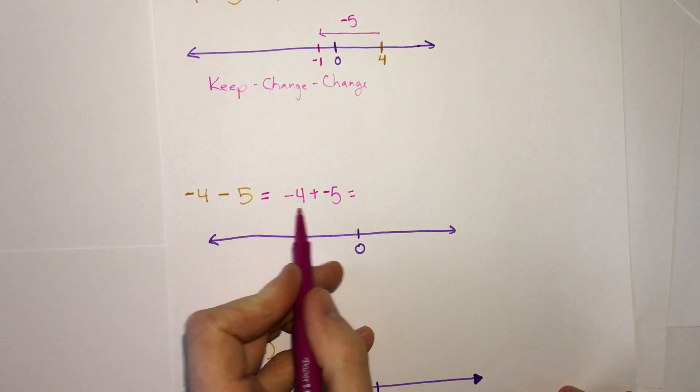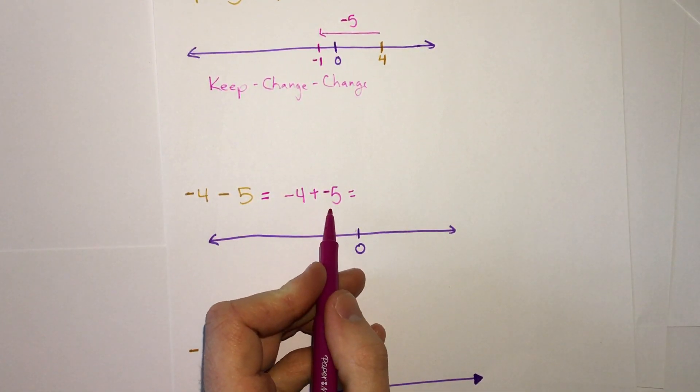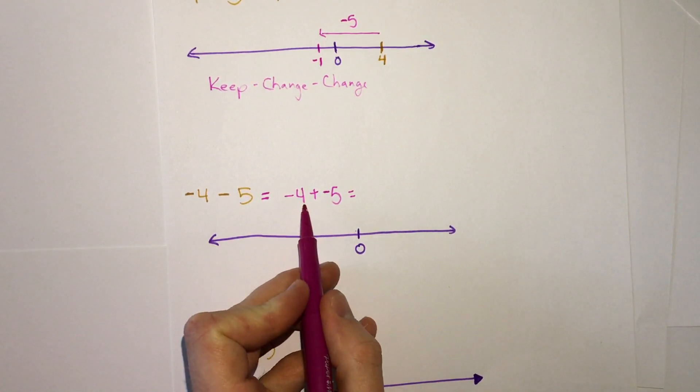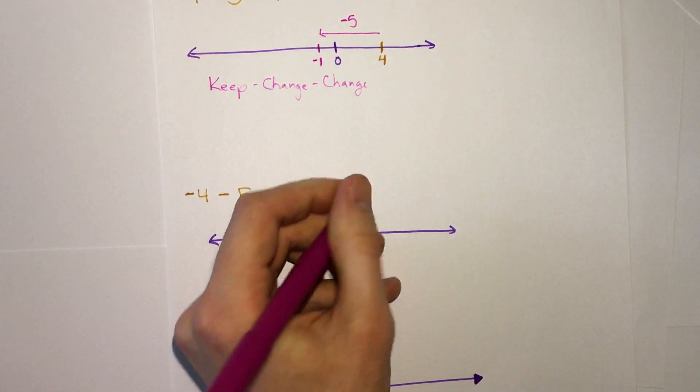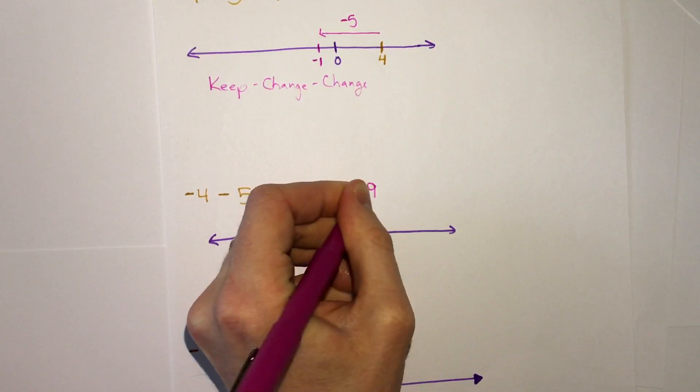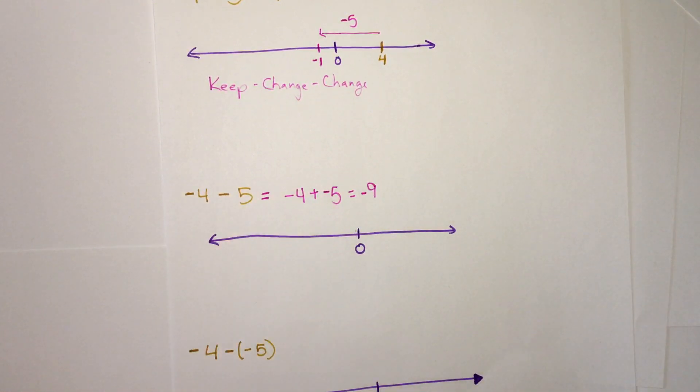Now, if we're adding two negatives, we should know that we are adding those two numbers. 4 plus 5 is 9, and because it's negative, the answer is negative.